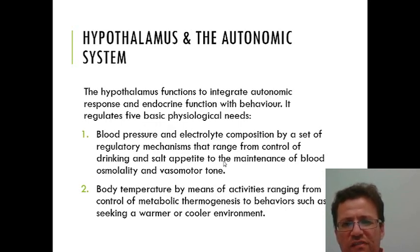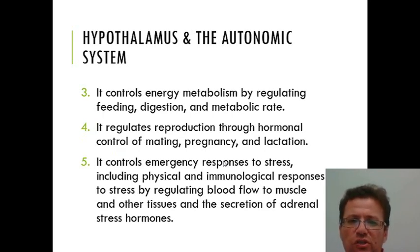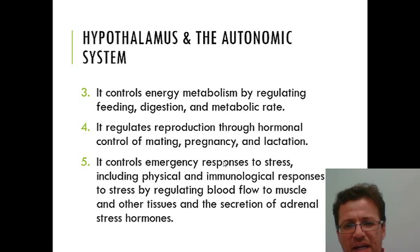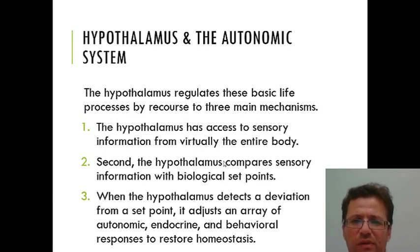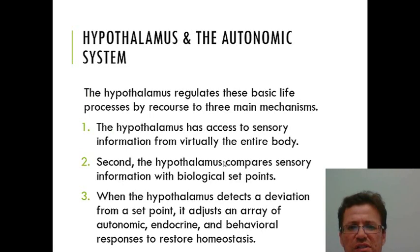Despite that, we do know the hypothalamus has an important role in linking the ANS with other bodily functions. We now know the hypothalamus regulates five basic physiological needs: blood pressure and electrolyte composition, body temperature, energy metabolism including feeding, digestion and metabolic rate, reproduction through hormonal control of mating, pregnancy and lactation, and emergency responses to stress. The hypothalamus coordinates endocrine, ANS, and behavioral responses to maintain core homeostatic processes. It receives vast sensory information from the entire body — like a security system observing everything.